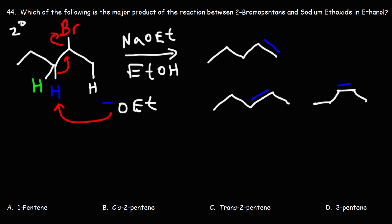It's not possible to get 3-pentene. Because when you name this alkene, it's going to be between carbons 2 and 3 and automatically it's going to be called 2-pentene. So 3-pentene simply doesn't exist. So those are the three possible products that we can get.